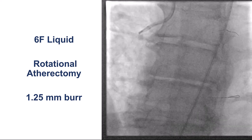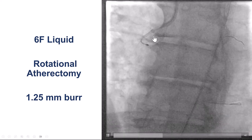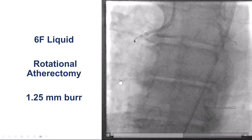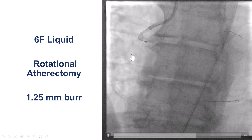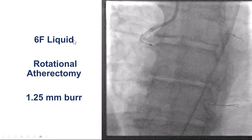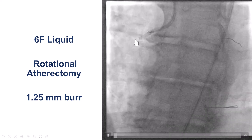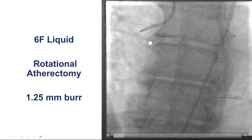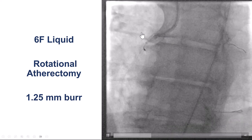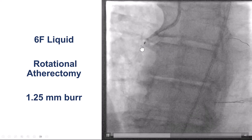We decided to do rotational atherectomy, but we didn't want to give up our wire into the right coronary artery. To avoid damaging that wire, we advanced a guide extension — the Guidezilla — which is very useful because it has a large lumen. We were then able to do rotational atherectomy using a 1.25 mm burr, and we can see it successfully going in and out of the circumflex.